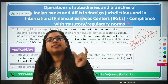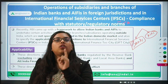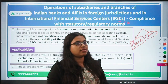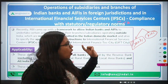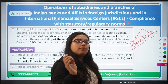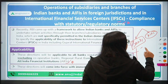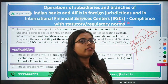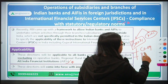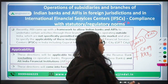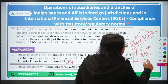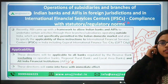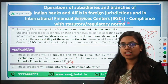The framework says you can undertake certain financial services which you are not allowed to undertake in India, and you can do so in foreign jurisdictions or in the International Financial Services Centre. However, not all banks are allowed — all scheduled commercial banks are included except cooperative banks. So any kind of cooperative banks, be it urban cooperative banks or rural cooperative banks, are excluded. Regional Rural Banks (RRBs) are also excluded, and so are local area banks.